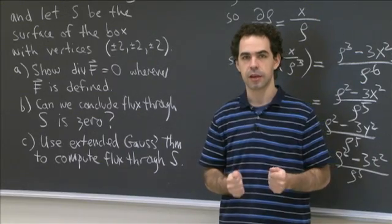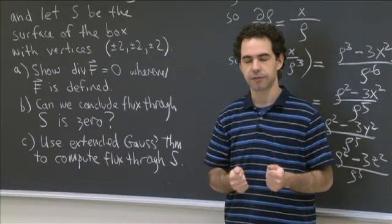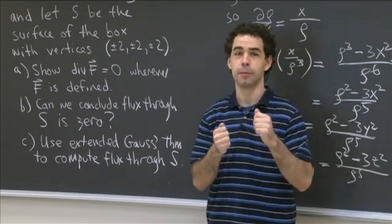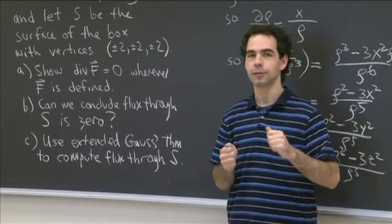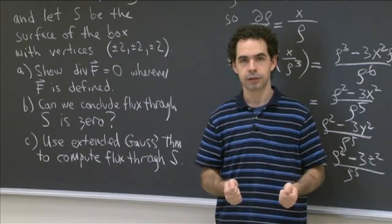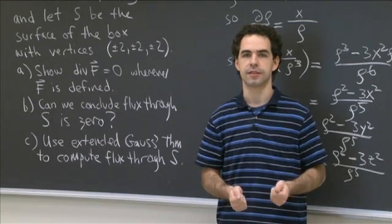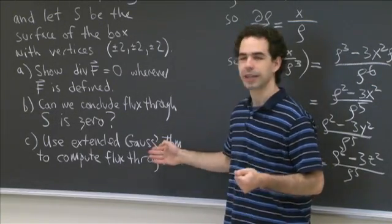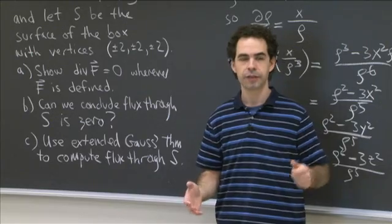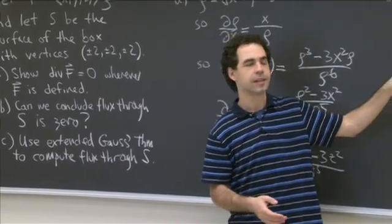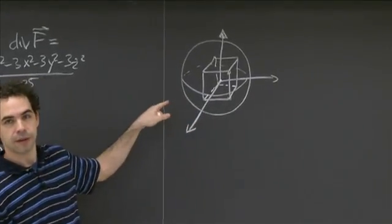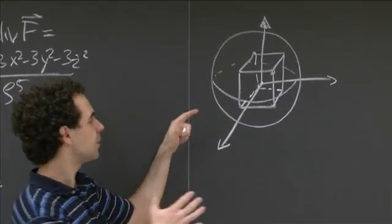So how are we going to use this? We're trying to compute the flux through the cube, but we don't want to compute a surface integral directly. So what we'd like to do is find a convenient region to put us in a situation where we can apply extended Gauss's theorem. We can't use just the inside of the cube, so we want some other region. One thing we can do is take a big sphere.